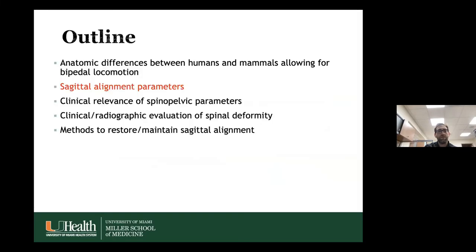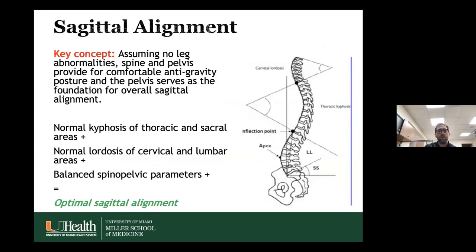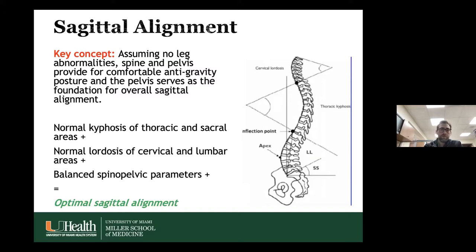The 'cone of economy' was coined by French pediatric orthopedic spine surgeon Jean Dubosset in the 1990s. At the center of this cone, the organism is balanced with minimal muscle activity required to maintain upright posture and low energy expenditure. As you move forward or backward, deviation increases the compensation needed to stand and results in increased energy expenditure. At extreme deviation, you need external support like a cane or walker.